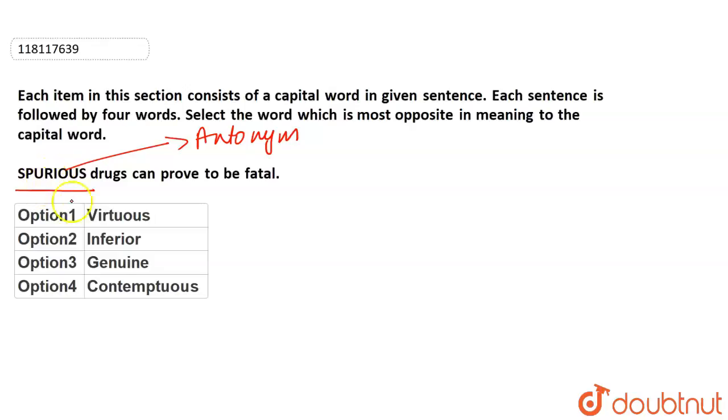So first of all, we need to know all these words so that we can find out this opposite meaning word. So our sentence is: Spurious drugs can prove to be fatal.